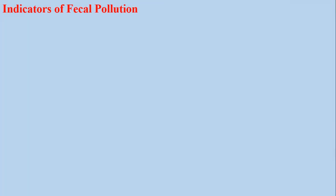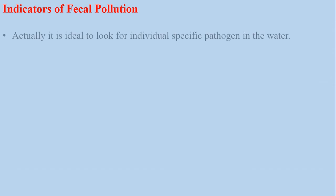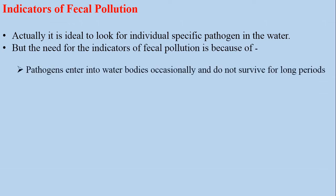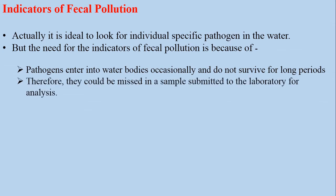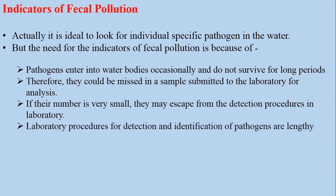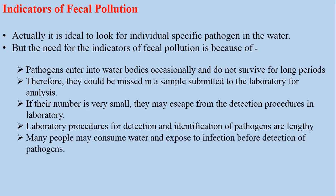What are the indicators of fecal pollution? Actually, it is ideal to check the water for individual specific pathogens, but there is a need for indicators of fecal pollution. This is because the pathogens enter into water bodies occasionally or irregularly and do not survive for a long period of time, and therefore they could be missed in a sample submitted to the laboratory for analysis. If the number of pathogens is very small, they may escape detection procedures in the laboratory. And the third reason is that laboratory procedures for detection and identification of pathogens are lengthy and time-consuming, so many people may consume the water and be exposed to infection before detection of the pathogens.